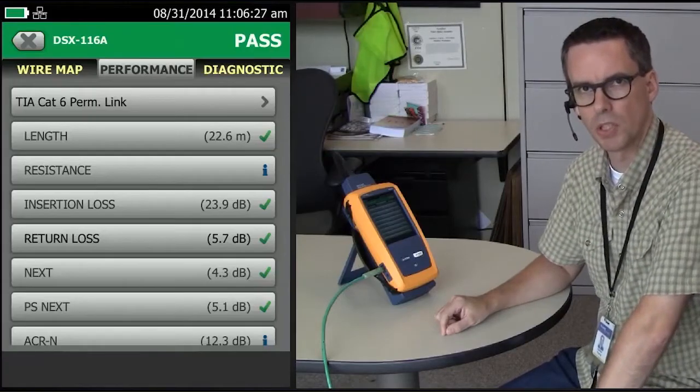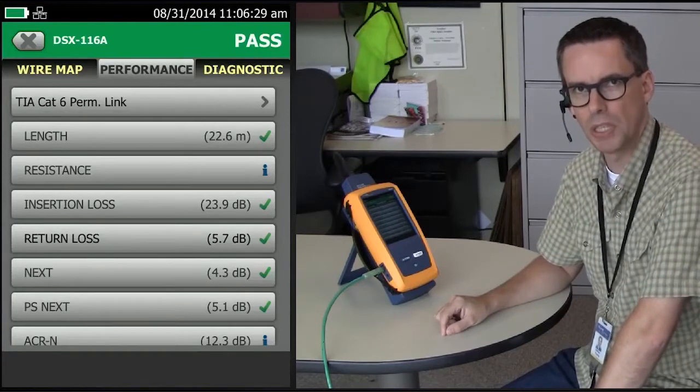There is a rather strange rule that applies to return loss measurements, and it's called the 3 dB rule.